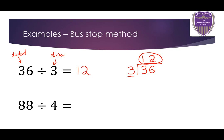In the next question, we've got 88 divided by 4. First, I write the divisor, which in this case is 4. I draw my bus stop, and I write in 88. Now, how many 4s are in 8? I know there are two 4s in 8. And how many 4s are in the second 8? Well, there's another 2 there. There are no more remainders, so my final answer for 88 divided by 4 is 22.